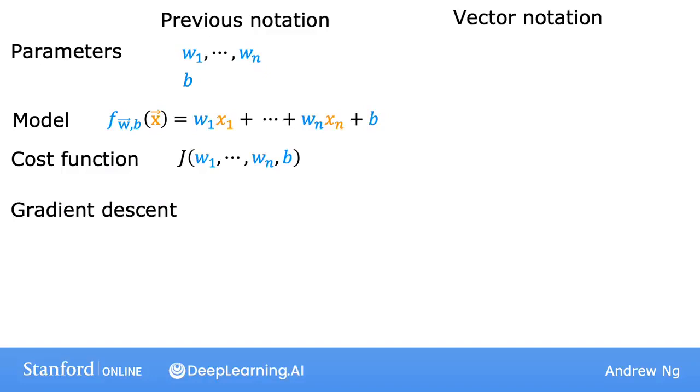Let's quickly review what multiple linear regression looks like. Using our previous notation, let's see how you can write it more succinctly using vector notation. We have parameters w1 to wn, as well as b. But instead of thinking of w1 to wn as separate numbers, that is, separate parameters, let's instead collect all of the w's into a vector w, so that now w is a vector of length n. So we're just going to think of the parameters of this model as a vector w, as well as b, where b is still a number, same as before.